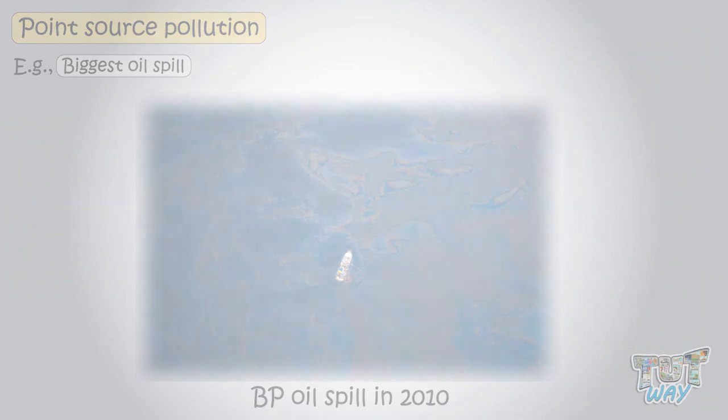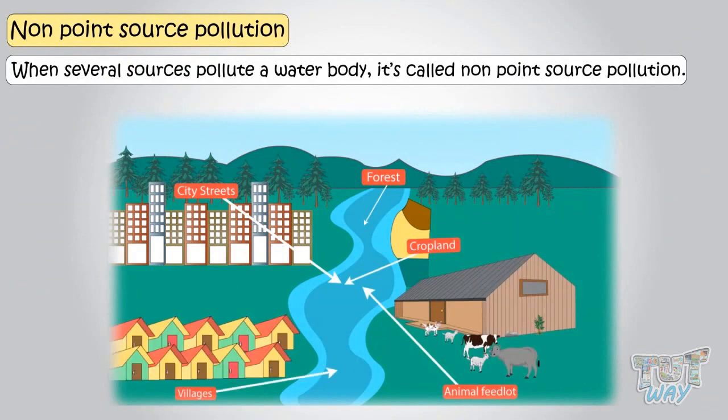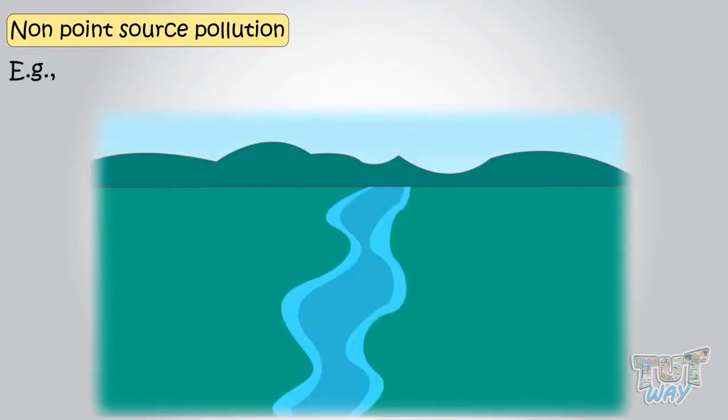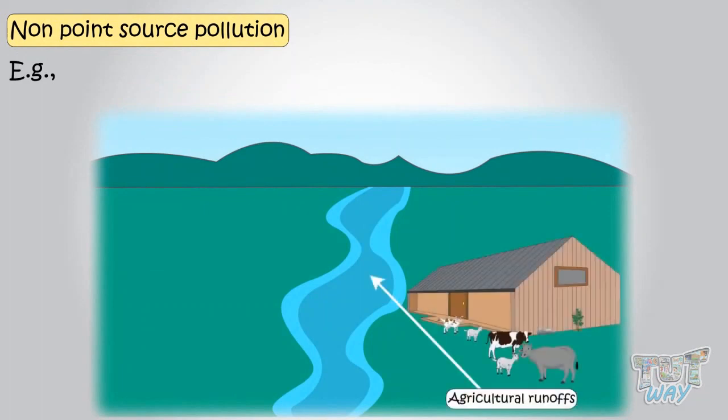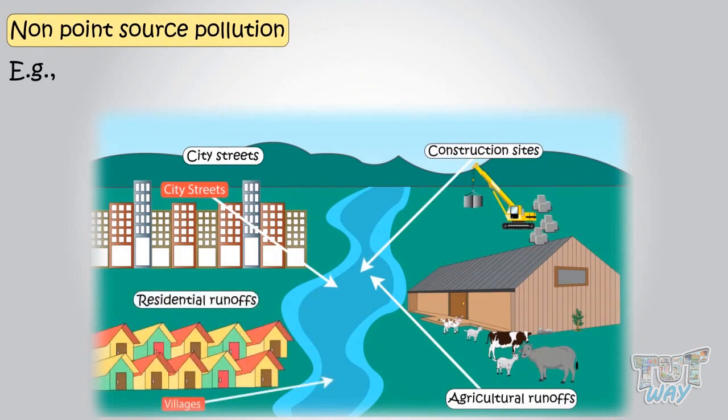When not one, but several sources of pollution are there that are contributing in polluting a water body, it's called non-point sources of pollution. For example, one body may be contaminated by multiple sources like agricultural runoff, city street runoff, construction sites, and residential runoffs.